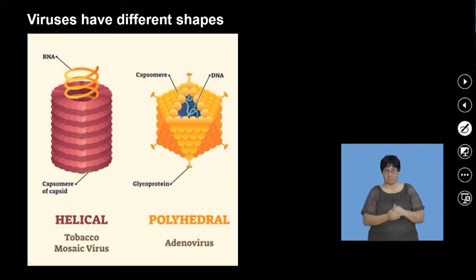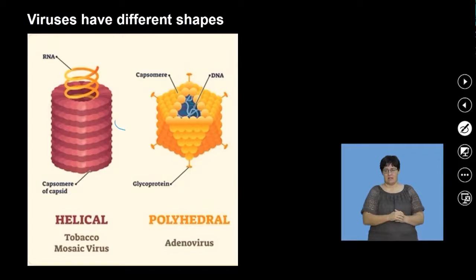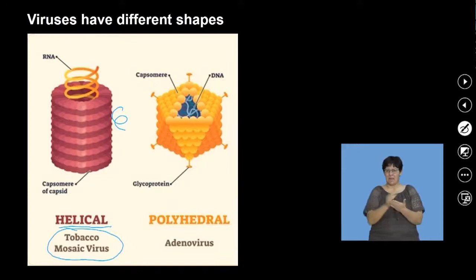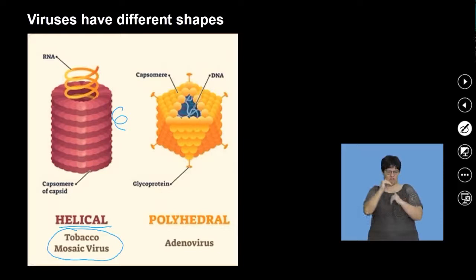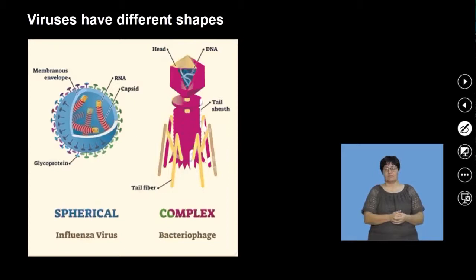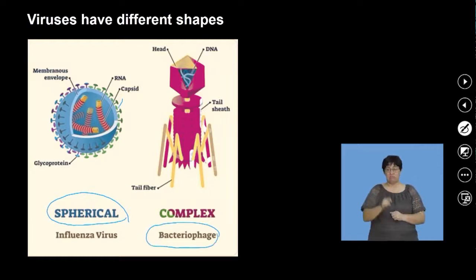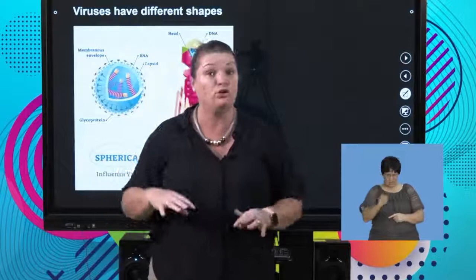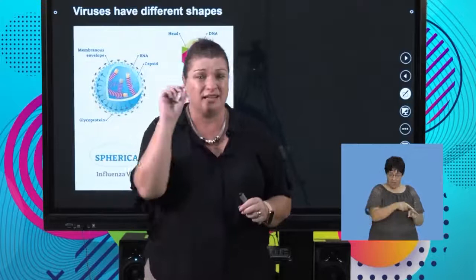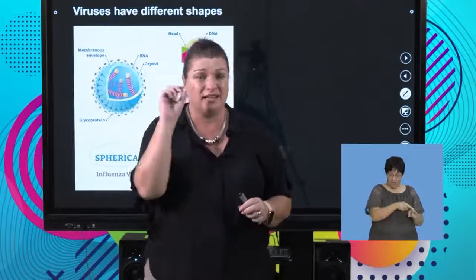Viruses have a few shapes. This shape we call the helical shape — a helix. Viruses attack plants as well; a common one is the tobacco mosaic virus. Some viruses are called polyhedral, meaning they have a lot of different shapes. The coronavirus is part of the spherical shape. There's also an interesting one called a bacteriophage, which attacks bacteria. So now you understand that bacteria are the smallest living thing, and viruses are even smaller than that.